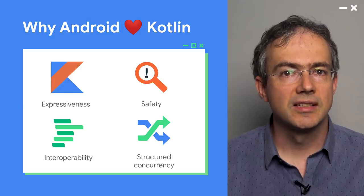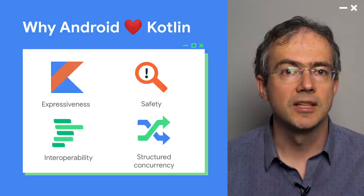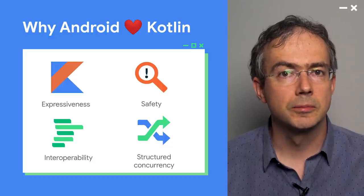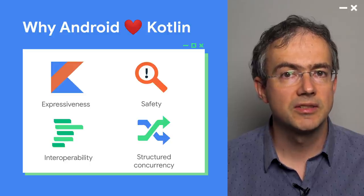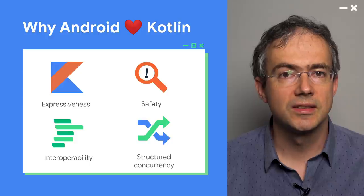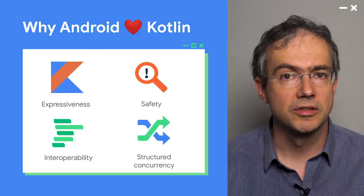Android has officially supported Kotlin since 2017, and there are good reasons why we fell in love with it. First, the language takes care of a lot of boilerplate, allowing developers to spend more time focusing on the business at hand. Kotlin's strong type system helps prevent runtime issues like null pointer exceptions. It also offers seamless interop with the Java programming language, allowing gradual adoption into existing projects. Finally, coroutines provide an elegant way to do asynchronous programming, avoiding spaghetti code often associated with callbacks.